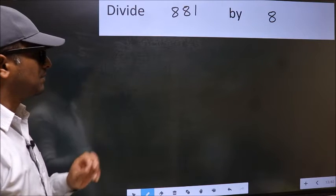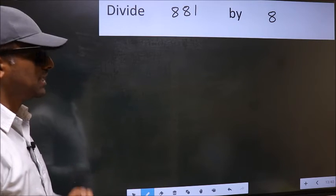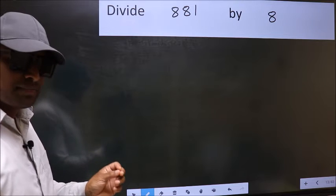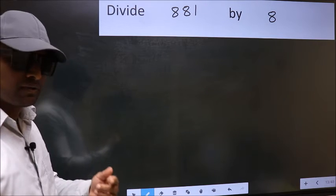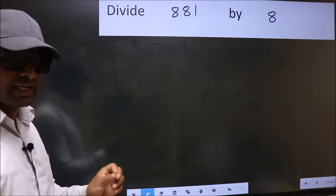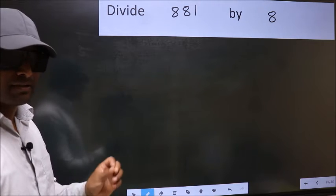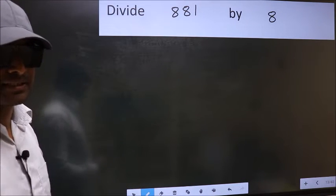Divide 881 by 8. While doing this division, many do this mistake. What is the mistake that they do? I will let you know. But before that, we should frame it in this way.